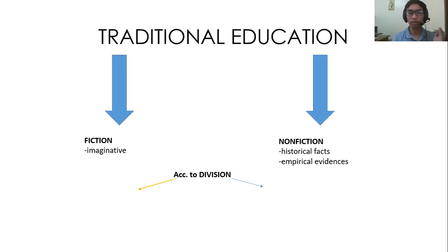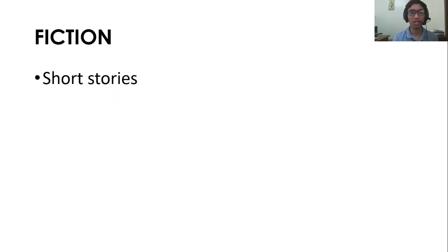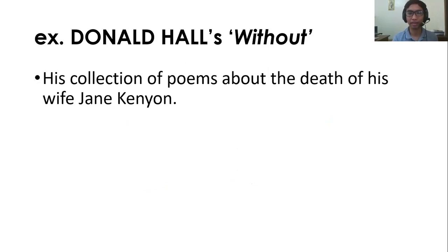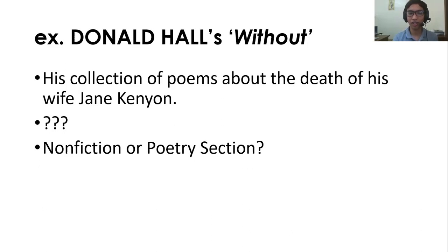According to another division, we have prose and poetry. The difference is only in how the texts are arranged. Examples of fiction include short stories, novels, poems, and plays. For instance, we have Donald Hall's 'Without' — his collection of poems about the death of his wife, Jane Kenyon. The question is: is it nonfiction or a poetry section? Where can we place this particular collection of poems by Donald Hall — is it nonfiction or poetry?